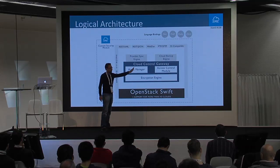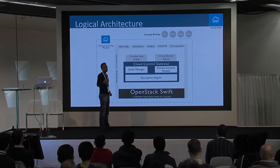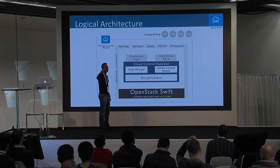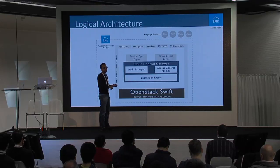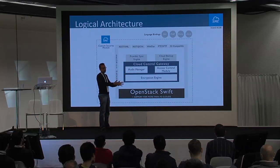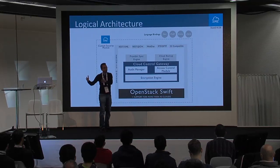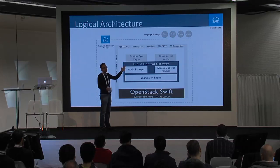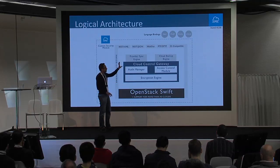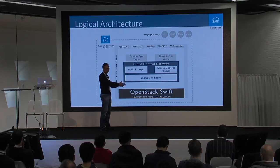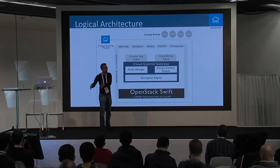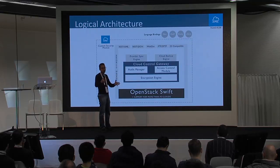We have an access control module used just like Windows shared folders. You can create shared folders, provide access to different users, set whether it's read access, write access, browsing, or folder creation — very granular permissions. Some users have a private cloud on premise but want to back it up to Amazon S3, Azure, or OpenStack Swift. We provide a backup engine where every action is replicated to the other storage cloud, providing business continuity. If the primary cloud goes down, it automatically switches to read-only mode on the backup cloud.